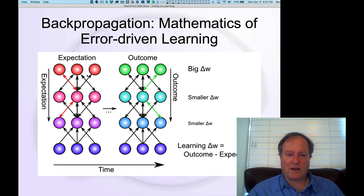And so here's the diagram. Again, we have the two different phases, the expectation or minus phase, and then the outcome or plus phase. And the key idea is that when you have changes between these two states, so you have some expectation.